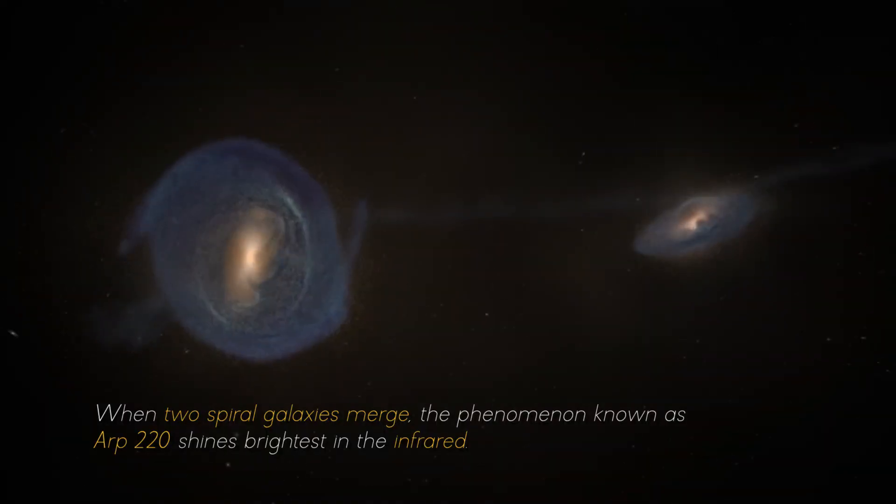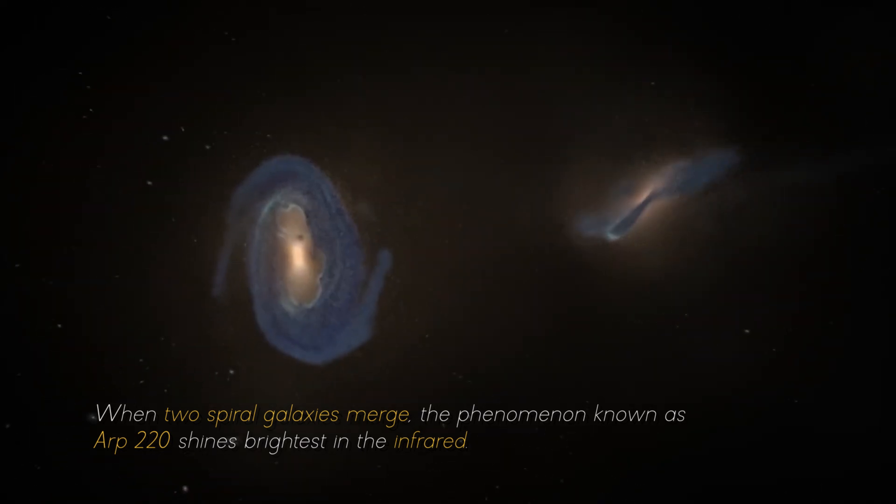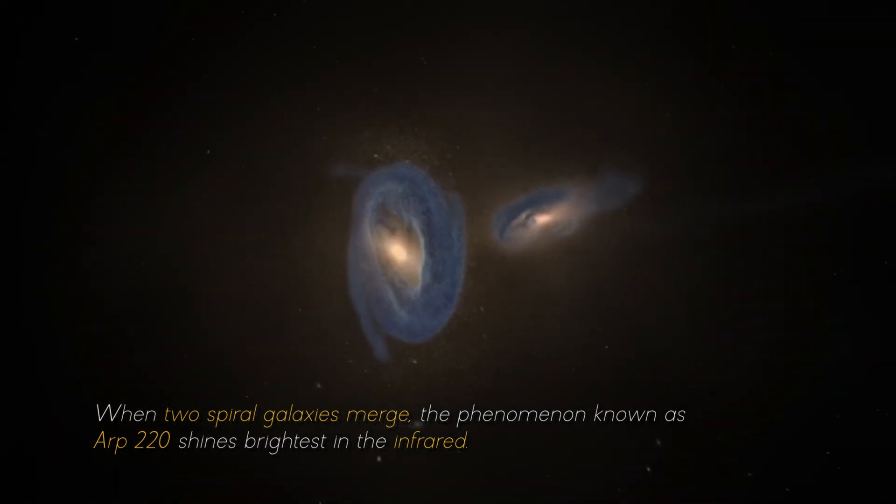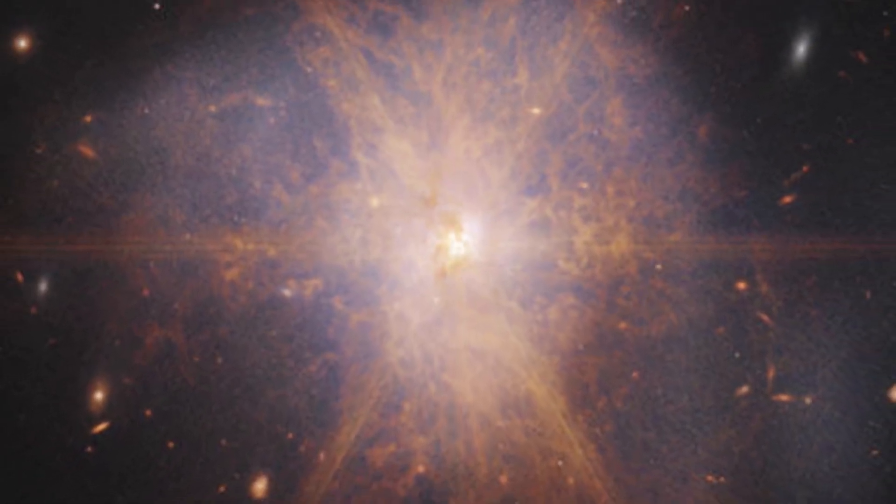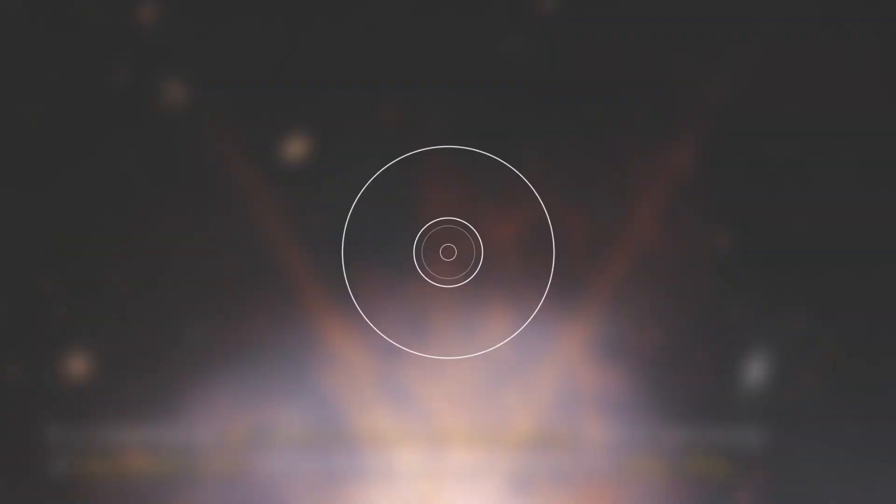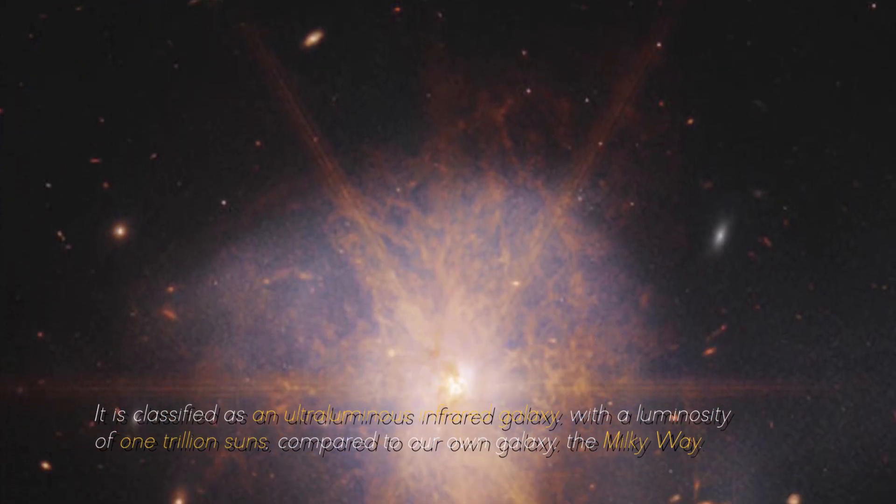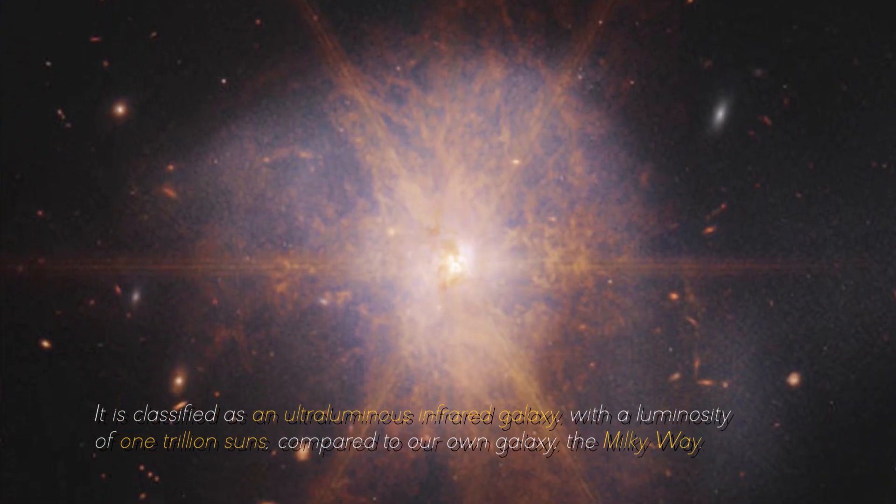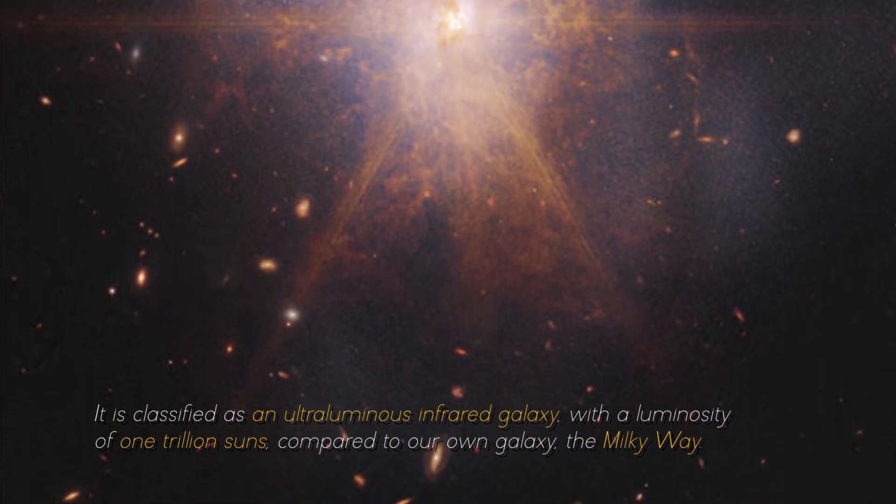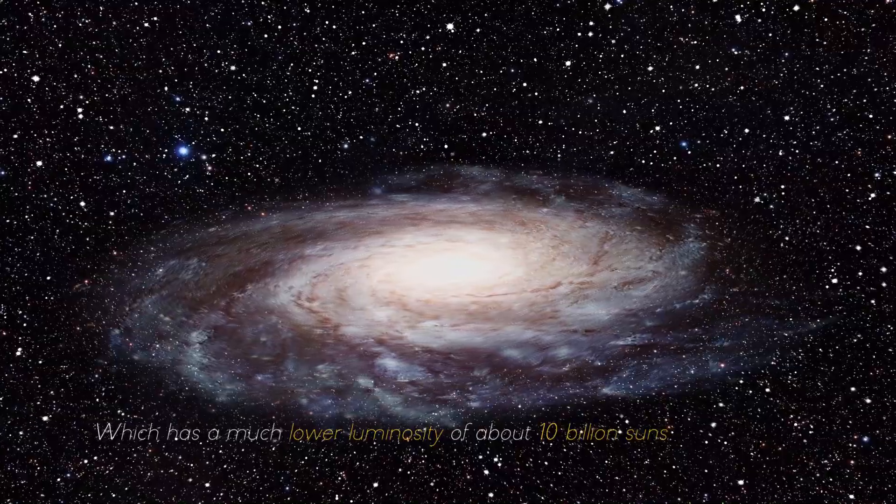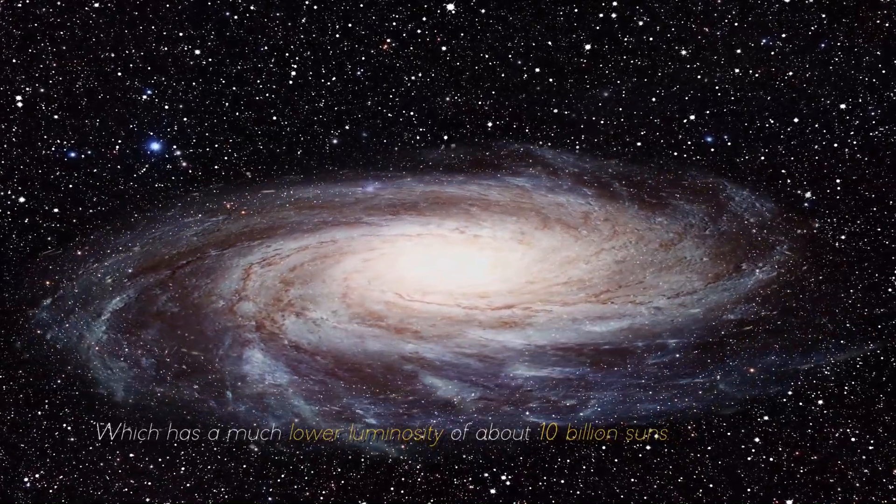When two spiral galaxies merge, the phenomenon known as ARP 220 shines the brightest in the infrared, making it perfect for observation by the James Webb Space Telescope. It is classified as an ultra-luminous infrared galaxy, with a luminosity of 1 trillion suns compared to our own galaxy, the Milky Way, which has a much lower luminosity of about 10 billion suns.